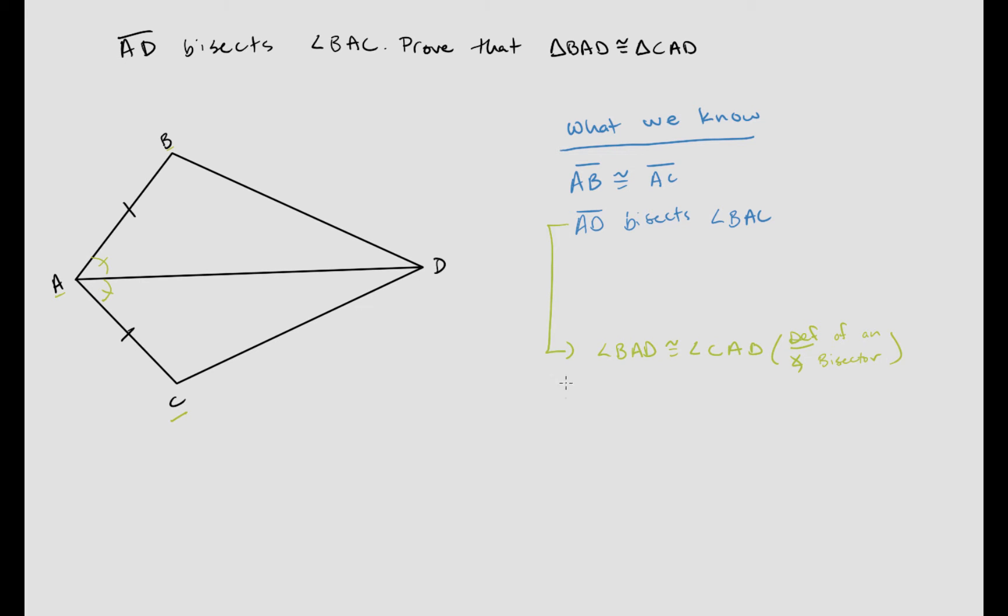Let's kind of try to come up with a game plan here, and so how might we prove this? Okay, well, let's think about this. Because so far we've only learned two possible ways of proving that triangles are congruent, and that is either side angle side theorem, postulate, or the side, side, side postulate.